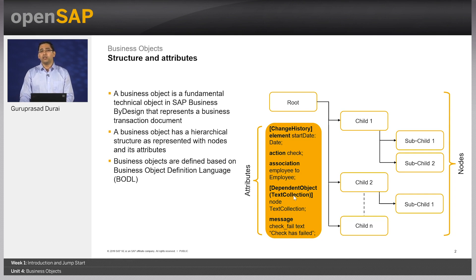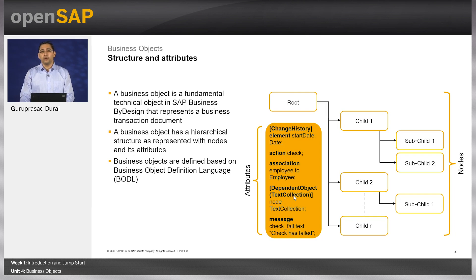Let us get into a bit more detail on the attributes of the business object. Number one: the elements. Once the business object and its nodes are defined, you can assign elements of a particular data type to the node. SAP Business by Design offers a wide variety of data types out of the box which can be consumed during the creation of a business object. For example, date, amount, currency, text, etcetera could be used as a data type.